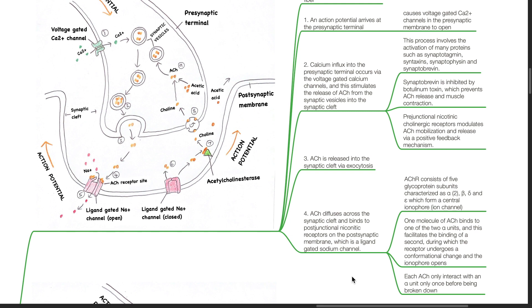ACHR consists of five glycoprotein subunits characterized as alpha, alpha, beta, delta and epsilon which forms a central ionopore. One molecule of ACH binds to one of the two alpha units and this facilitates the binding of a second during which the receptor undergoes a conformational change and the ionopore opens.